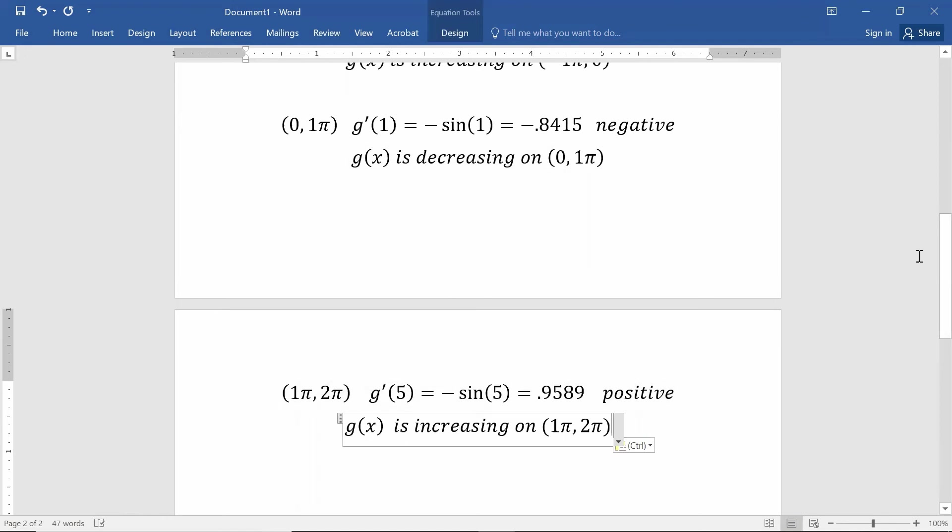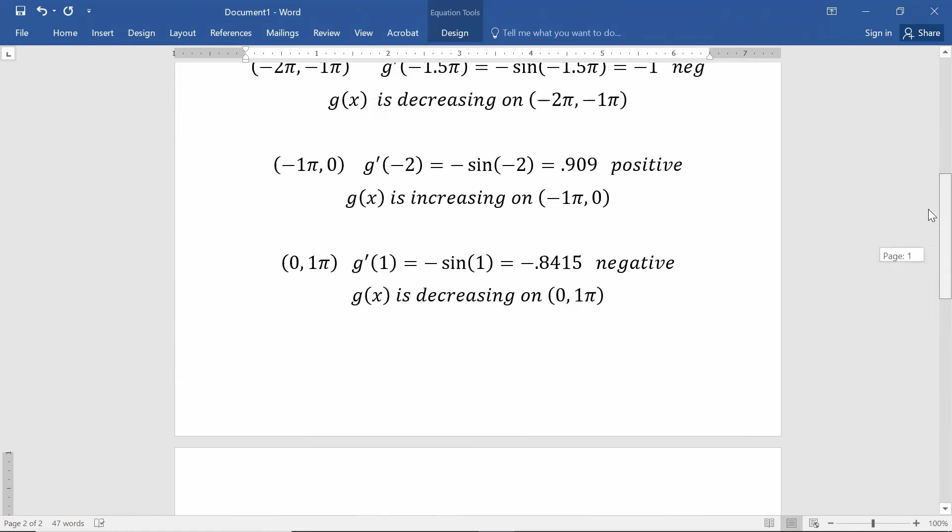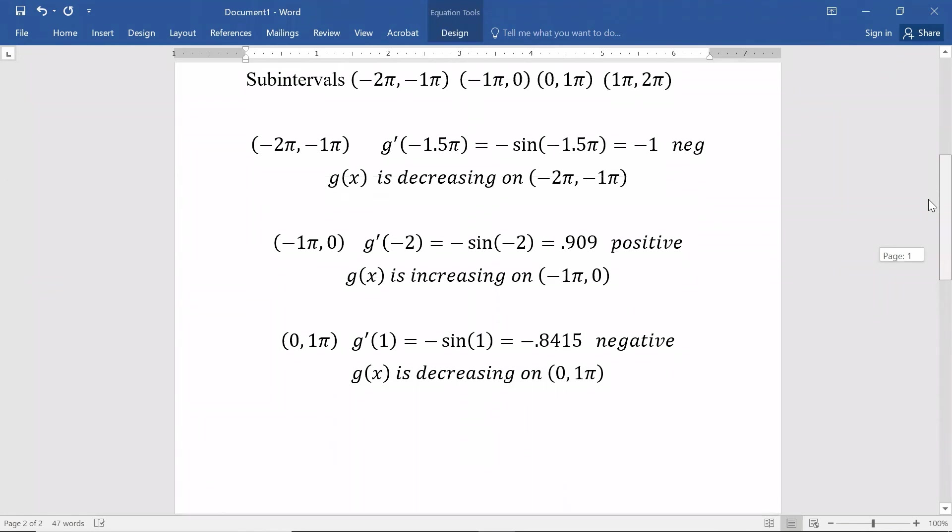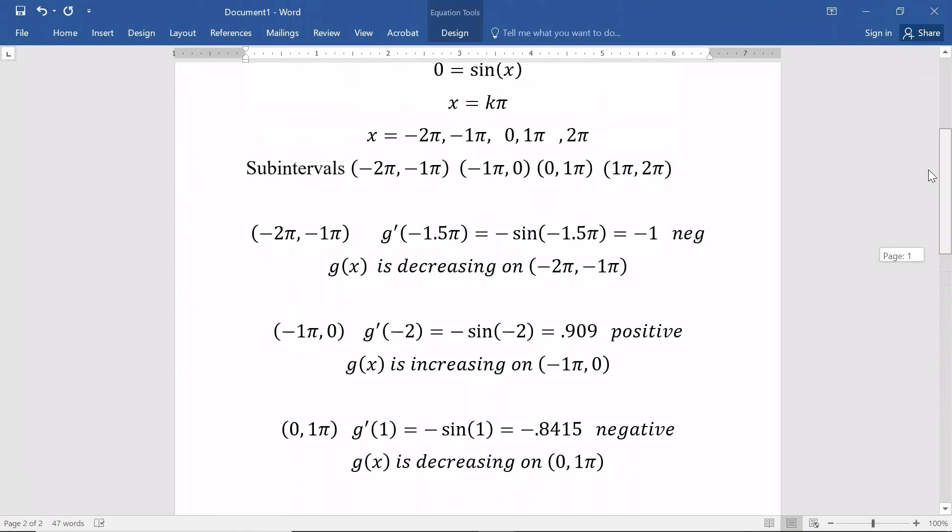That did not happen in my two examples. We went back and forth in these two examples, but it would happen in other circumstances. So just be careful that you don't automatically assume it always jumps back and forth between increasing and decreasing. Sometimes you'll get two increasing sections in a row. Sometimes you could get two decreasing sections in a row.